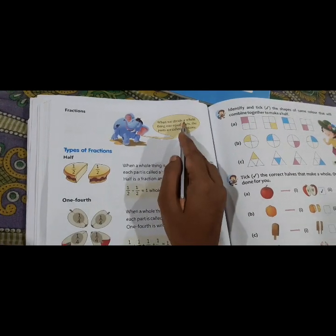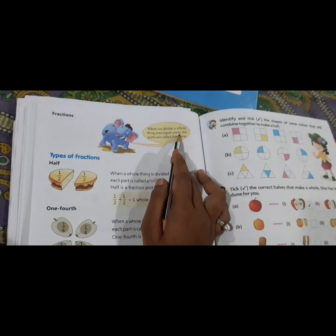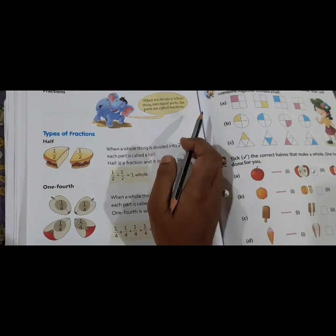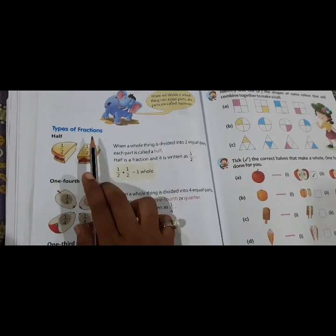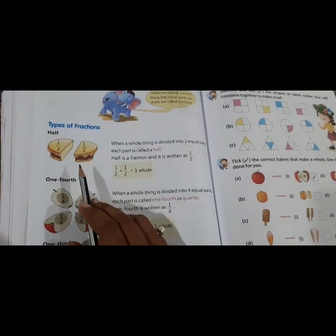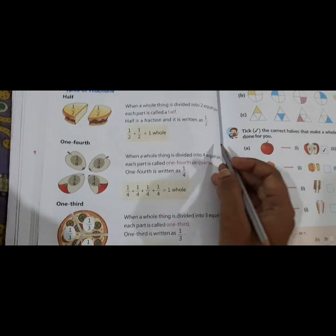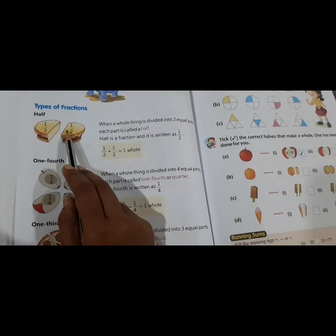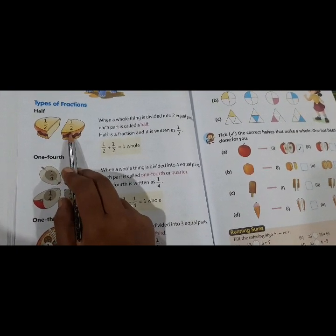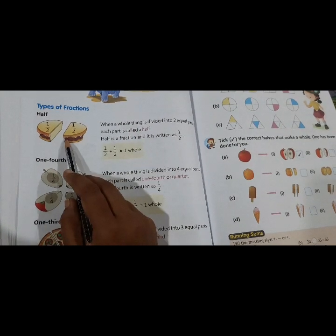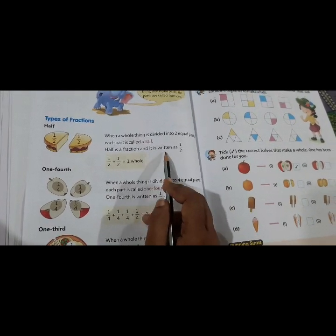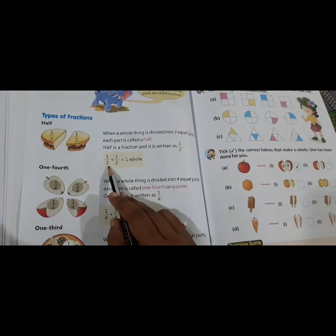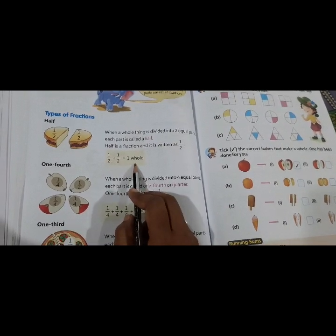Page number 96. Fraction. When we divide the whole things into equal parts, the parts are called fraction. As I explained, we have types of fraction that is half, one fourth, and one third. Now, when a whole thing is divided into two equal parts, each part is called a half. Half is a fraction and it is written as 1/2. If we are going to add this, we get the number one as a whole.